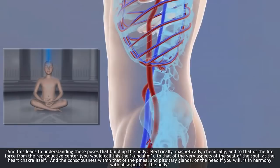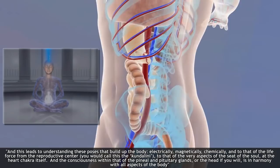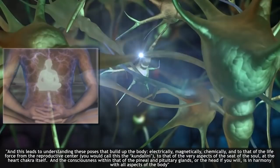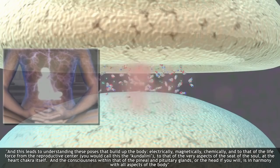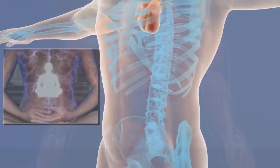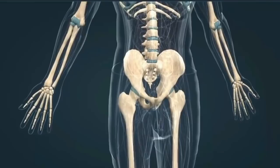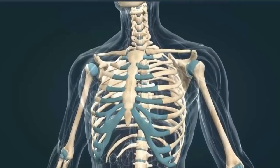And this leads to understanding these poses that build up the body electrically, magnetically, chemically, and to that of the life force from the reproductive center, you call this the kundalini, to that of the very aspects of the seat of the soul at the heart chakra itself, and the consciousness within that of the pineal and pituitary glands, or the head. There is harmony in harmony with all aspects of the body, from the tip of the toe to the top of the head. There is a blessing, there is an honoring, there is a building up of the cells through these practices of the five.